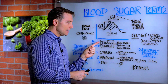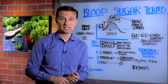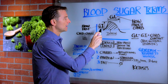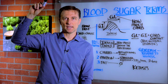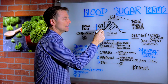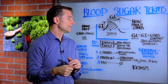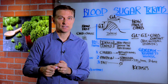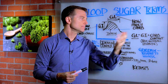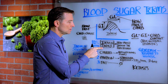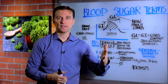The insulin index is another scale measuring how much insulin the body is going to release. The difference between glycemic index and insulin index: the glycemic index measures the blood sugar spike, while the insulin index measures the insulin spike — completely different. Non-carbohydrate things can also spike insulin. The insulin index goes beyond just carbohydrates.